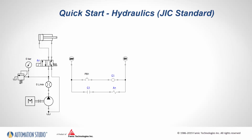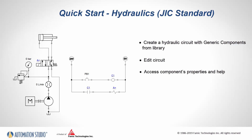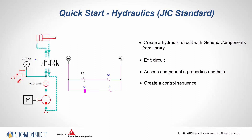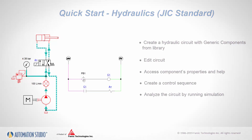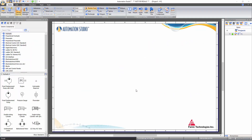This training video outlines the steps to create your first hydraulic or electro-hydraulic circuit in Automation Studio using JIC standards for electrical control. In the process of recreating this circuit, the user will learn how to create a hydraulic circuit with generic components from the library, how to do circuit addition, how to assess component properties and help, how to create a control sequence, and how to run simulation and analyze the circuit.